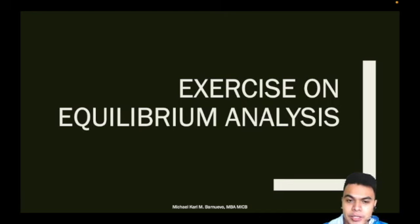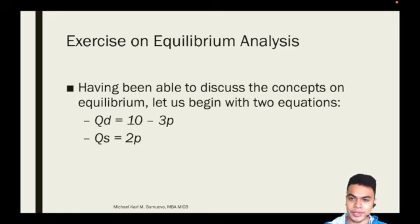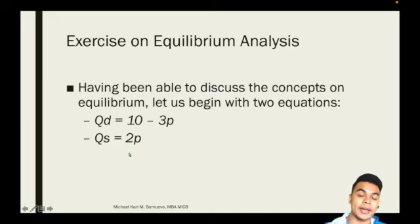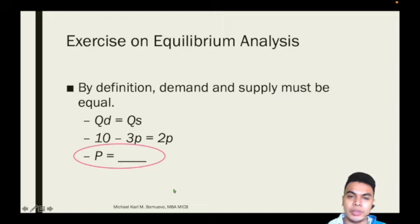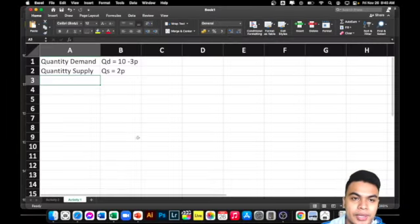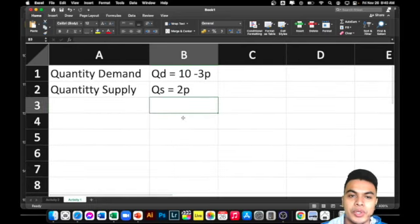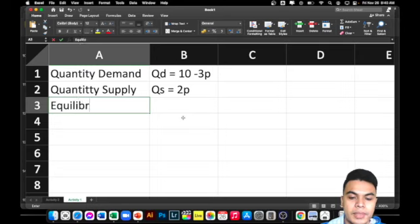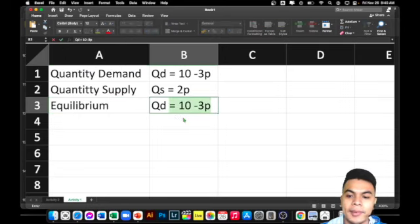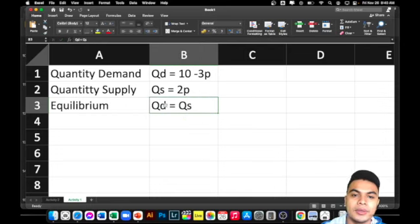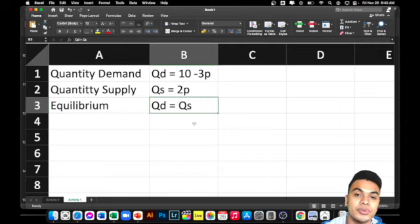So let's have a simple exercise in equilibrium analysis. How do we really compute for the equilibrium? I have both equations for the quantity demanded and quantity supplied. To find the equilibrium, the first step we need to do is to find the price. Equilibrium means that the quantity demanded is equal to the quantity supply. So we will substitute: the value for QD is 10 minus 3P, and for QS it is 2P.